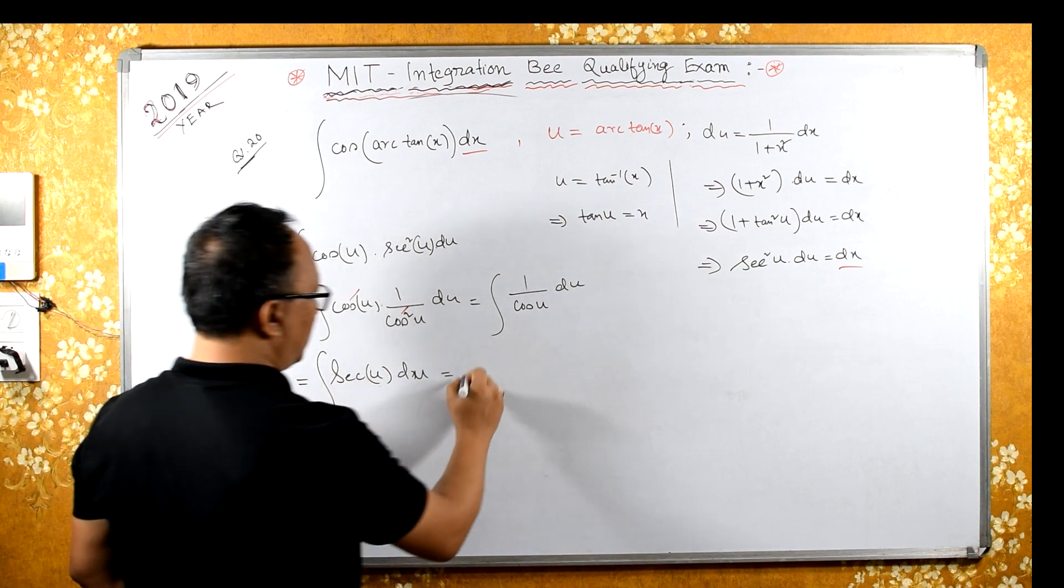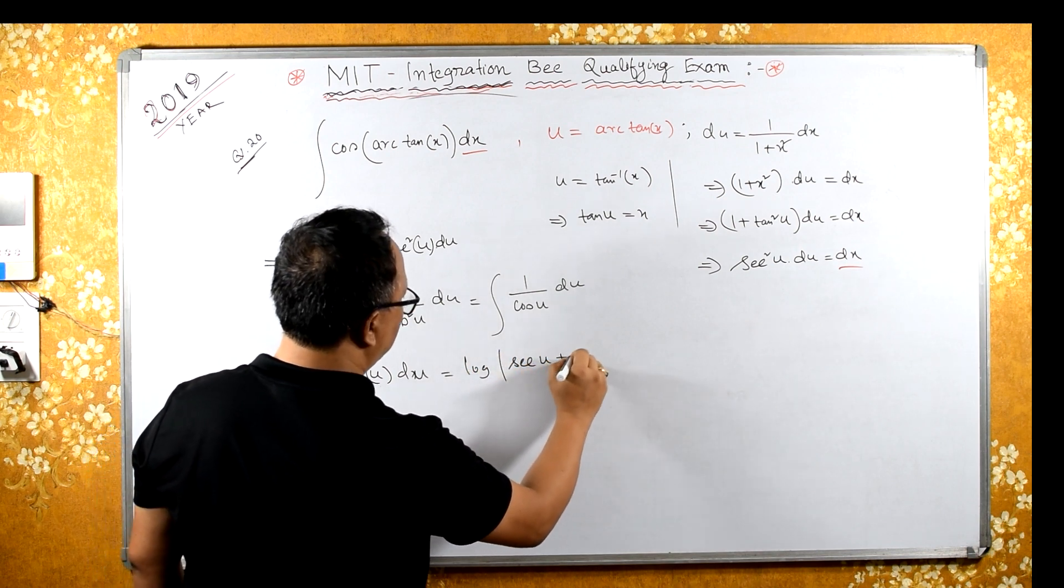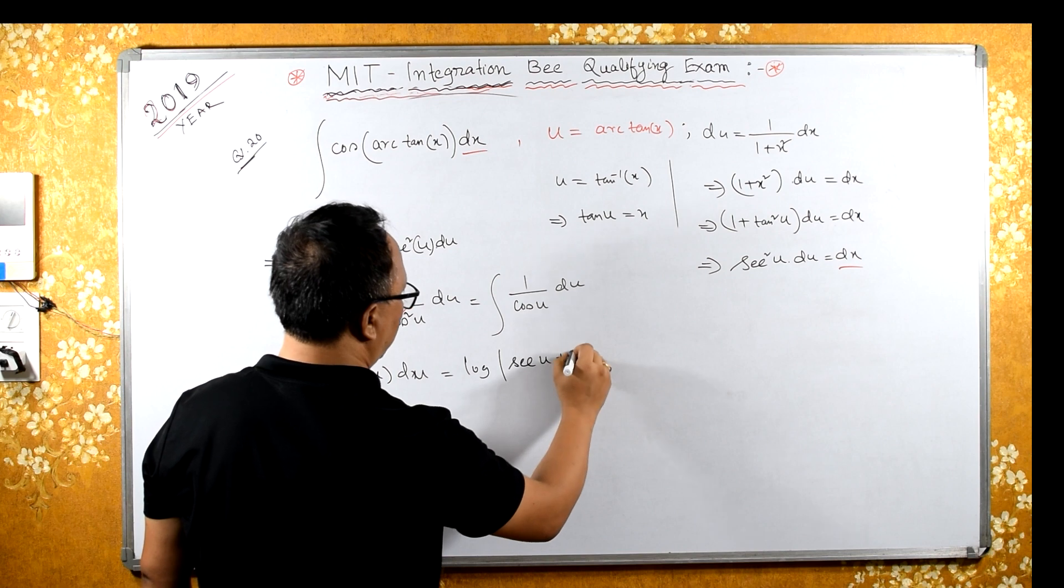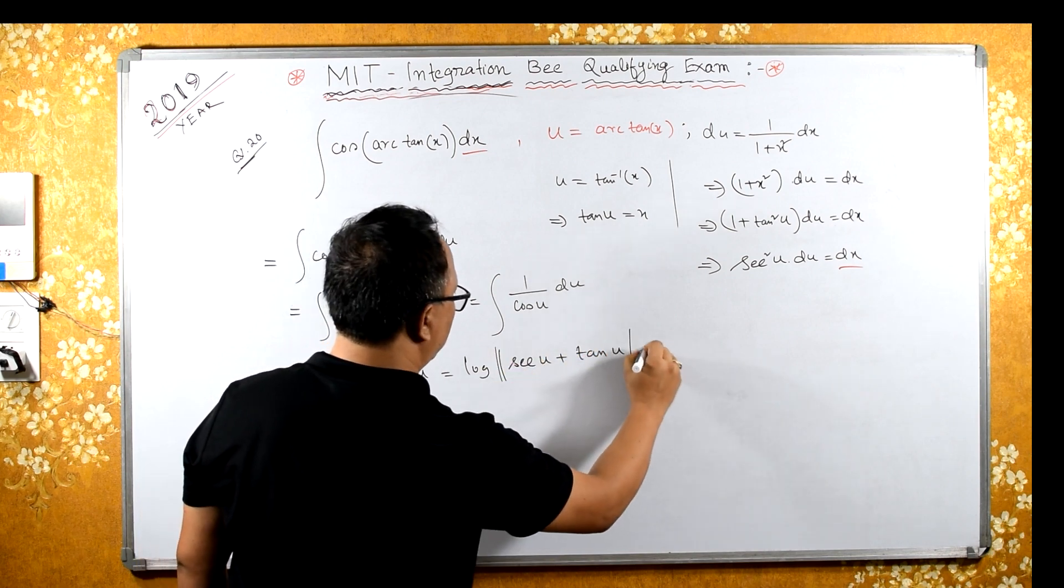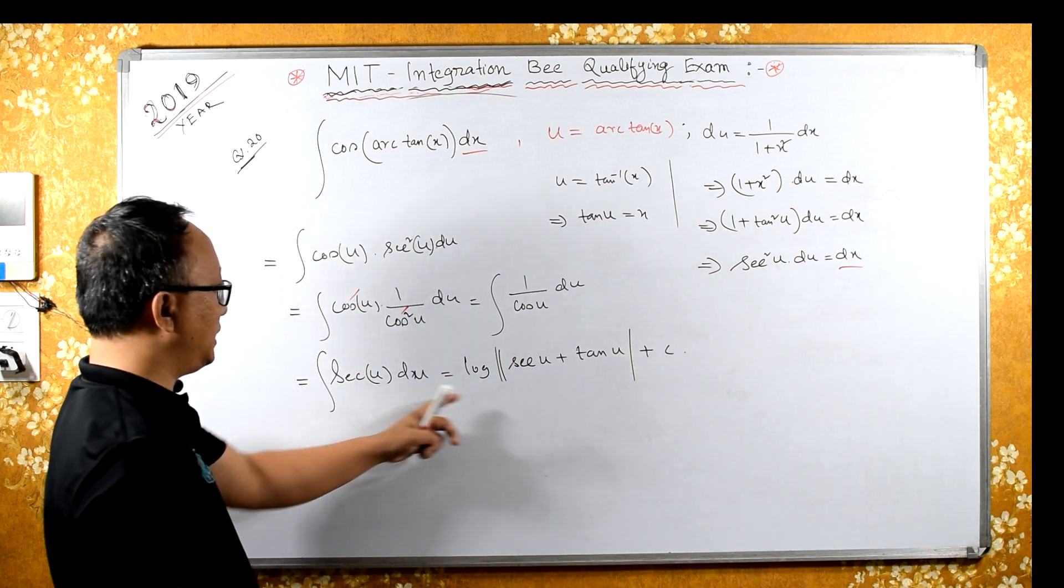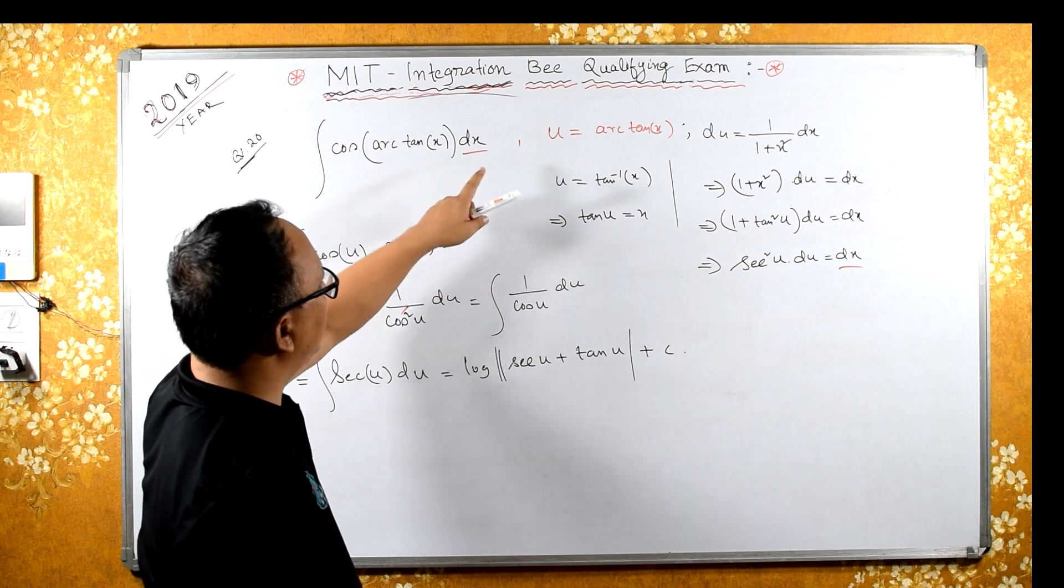Now integral of sec is log of sec u plus tan u plus some constant. But you need to convert this back into x.